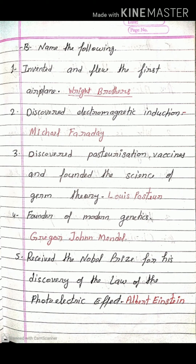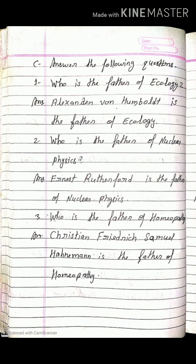Next: received the Nobel Prize for his discovery of the law of the photoelectric effect. Answer is Albert Einstein. Now, next exercise: answer the following questions. Question number one: who is the father of ecology? Answer is Alexander von Humboldt. Next: who is the father of nuclear physics? Answer is Ernest Rutherford.